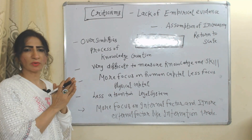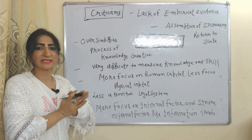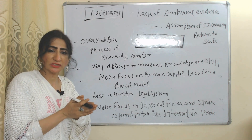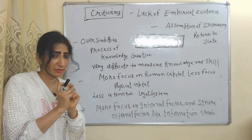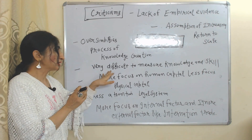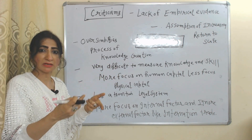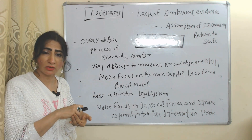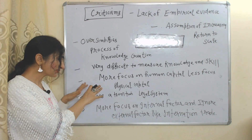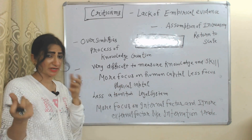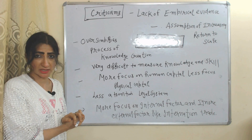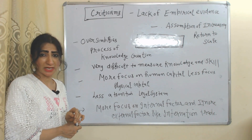Criticisms of endogenous growth models include: lack of empirical evidence supporting them; the assumption of increasing returns to scale is not very practical, as constant returns to scale is more realistic; they oversimplify the process of knowledge creation; knowledge and skills are difficult to measure; they focus more on human capital and less on physical capital; they give little attention to the legal system; and they focus on internal factors while ignoring external factors like globalization and international trade.